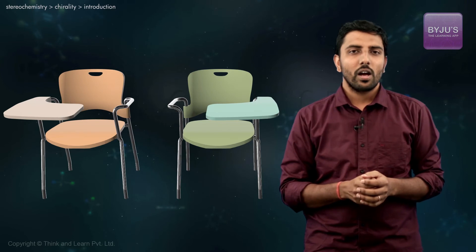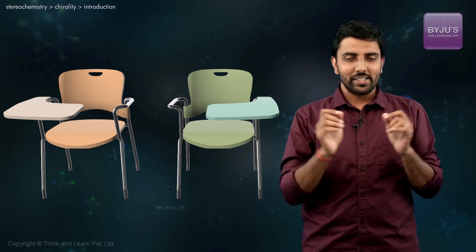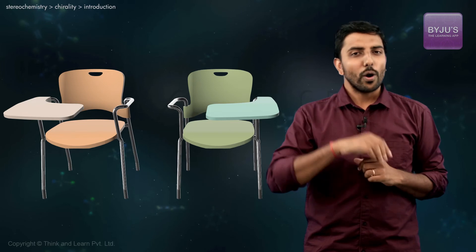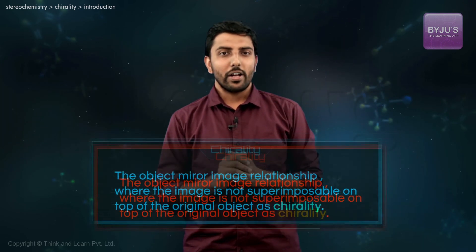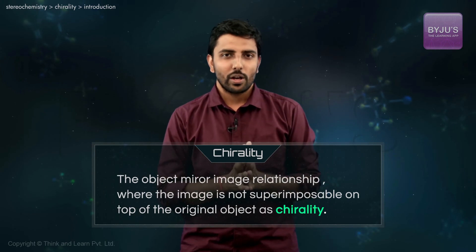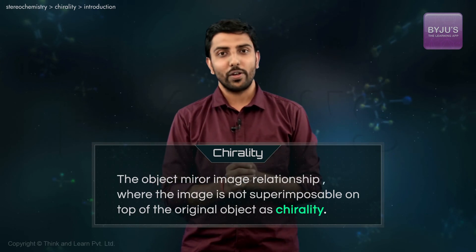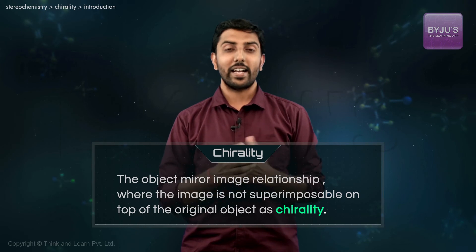We define objects whose mirror images are not superimposable on top of the original object to be chiral. We define the object-mirror image relationship where the image is non-superimposable on top of the original object as chirality. The word derives its meaning — handedness — from Greek origins. And those objects whose mirror images are exactly superimposable, as in the mirror image happens to be identical to the original object, we define them to be achiral.